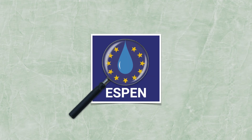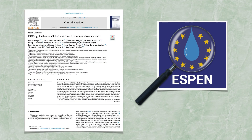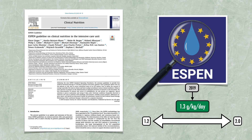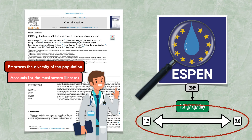Looking at resources beyond the critical care guidelines, we can turn to the European Society for Clinical Nutrition and Metabolism. In 2019, they released their own guidelines on nutrition in the ICU, with a protein recommendation of 1.3 grams per kilogram per day. As you can see, this falls within the critical care guidelines but is on the lower end of the range. I personally prefer the range of 1.2 to 2.0 grams per kilogram per day, since it embraces the diversity of the population and accounts for the most severe illnesses in which protein breakdown is profound.